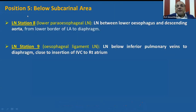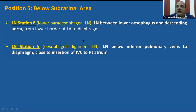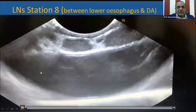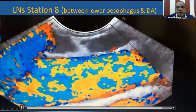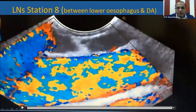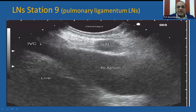Position 5, below the subcarinal area, also includes lymph node stations 8 and 9. Lymph node station 8 is the lower para-esophageal lymph node — the lymph node between the lower esophagus and the descending aorta. While lymph node station 9 is lymph node below the inferior pulmonary veins to the diaphragm, close to the insertion of IVC to the right atrium. This video shows lymph node station 8: the descending aorta and the lymph node between the esophagus and the descending aorta. This is lymph node station 9, with the upper portion of IVC close to its insertion to the right atrium and the liver — the pulmonary ligament lymph node, station 9.